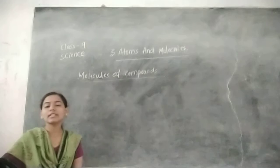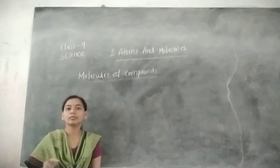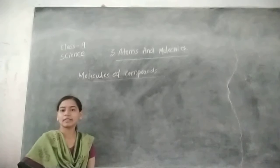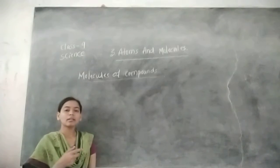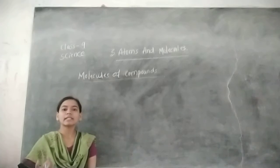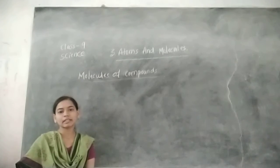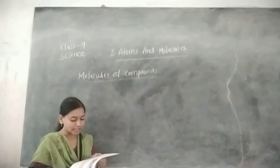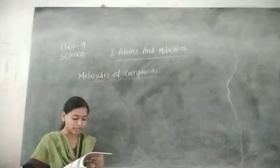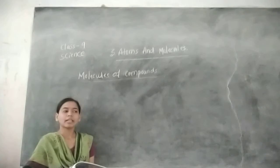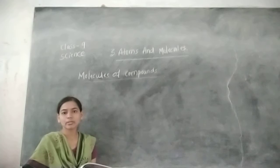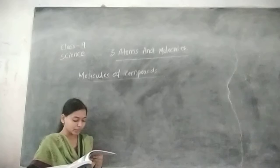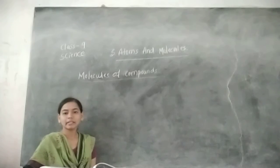Molecules can form with the same type of atoms or different types of atoms. Compounds also form by the same type or different types of atoms. Here we are considering atoms of different elements joining together in a definite proportion. If there is no definite proportion, there is no compound formed. A few examples are given in the table.